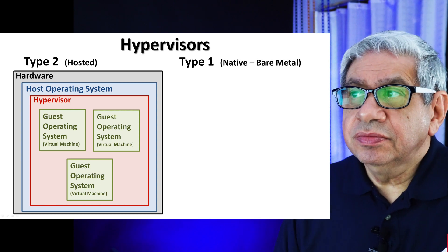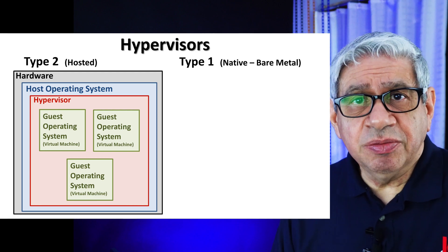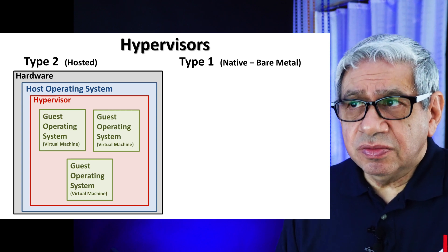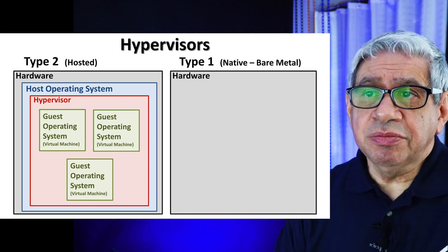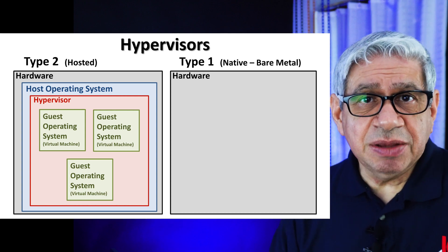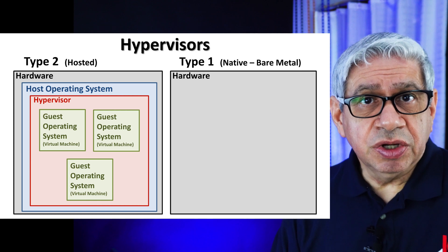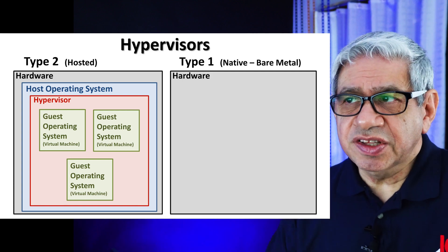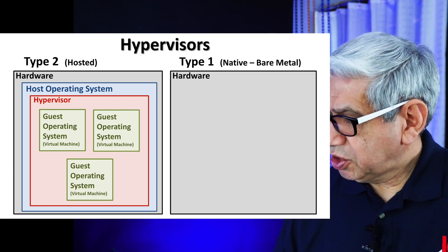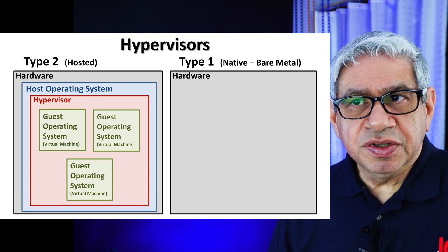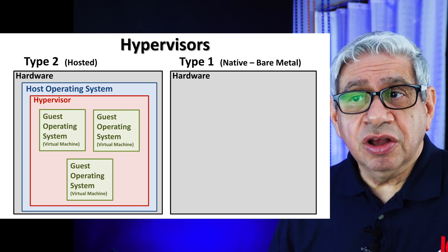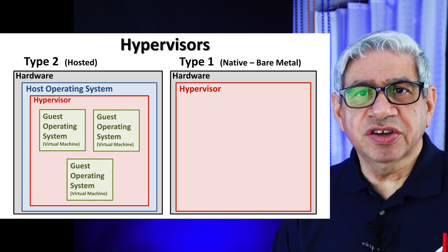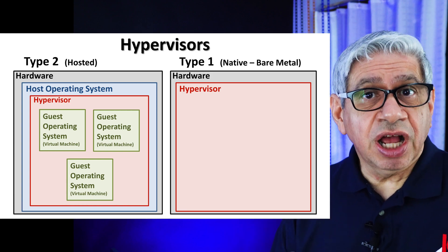A Type 1, also referred to as a native hypervisor — some people call it the bare metal hypervisor — because it's going to run on the same kind of hardware. I'm intentionally showing them as the same size, because let's say it's the exact same PC with the same number of processors, threads, memory, and so forth. One big difference: in a Type 1, we don't have a host operating system. We go right into the hypervisor.